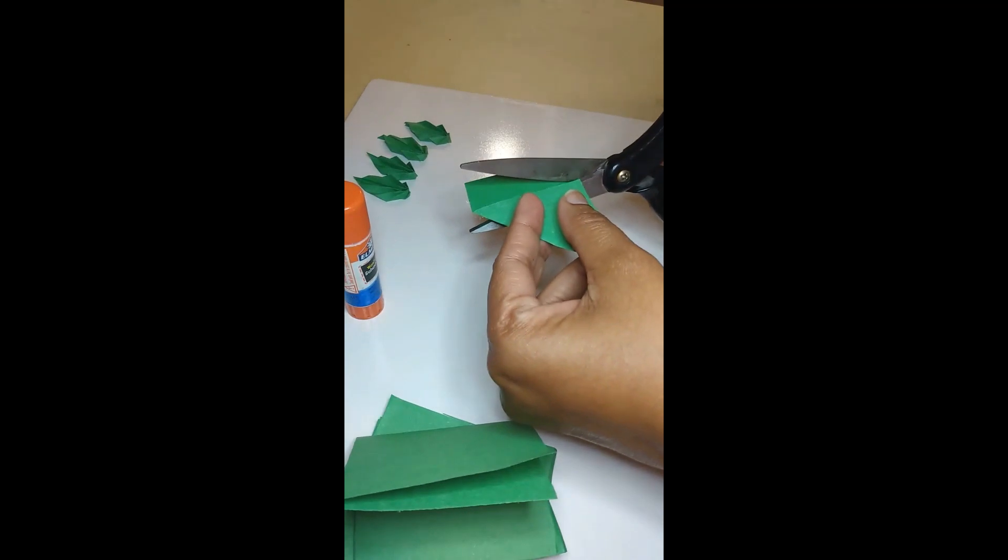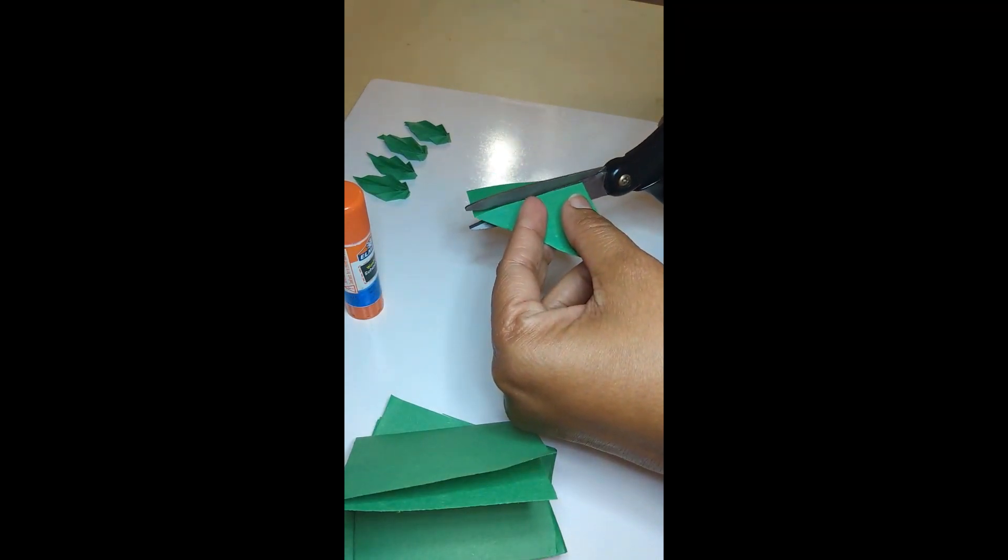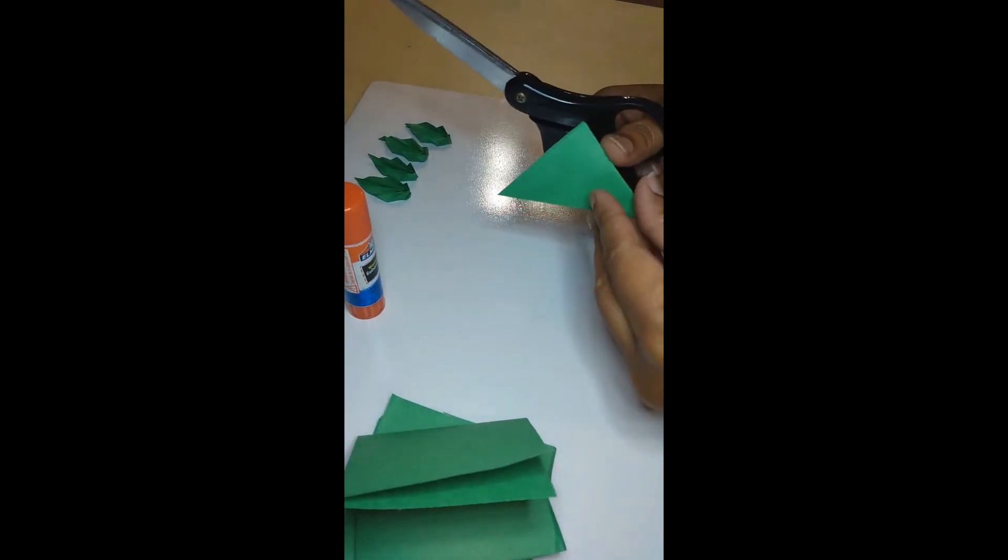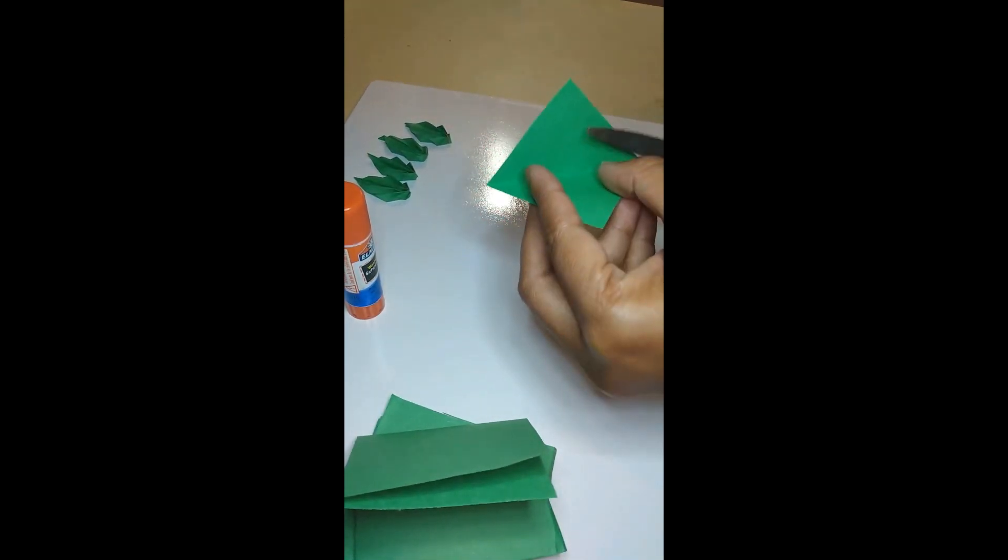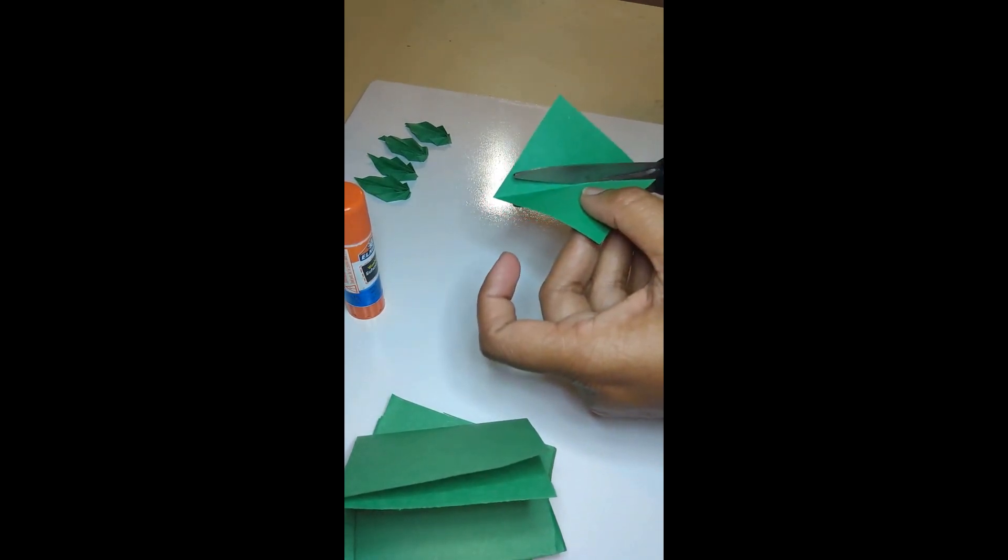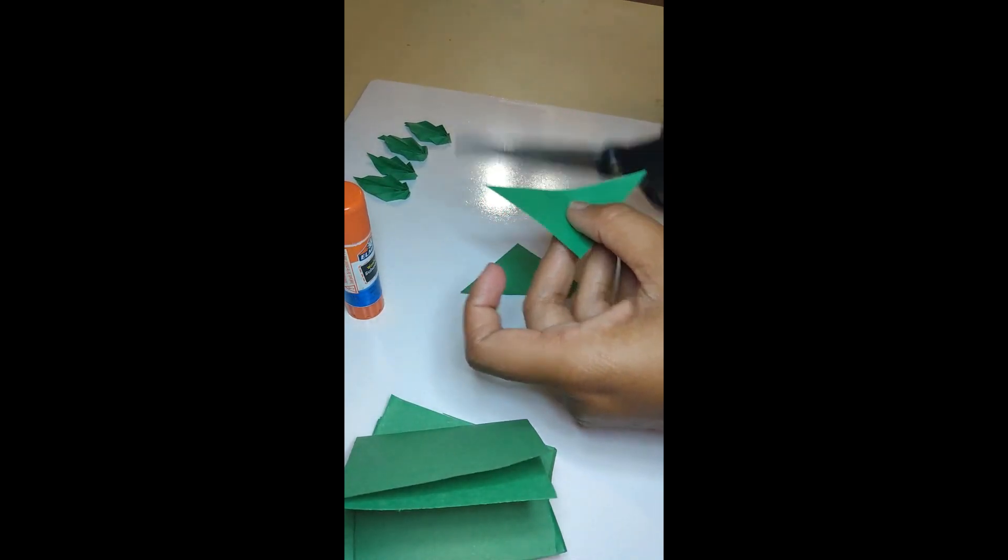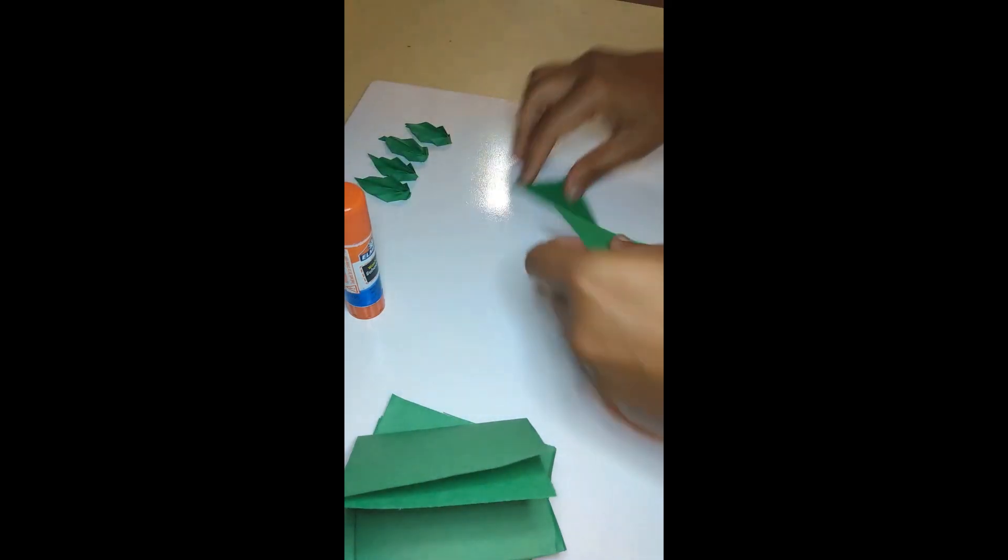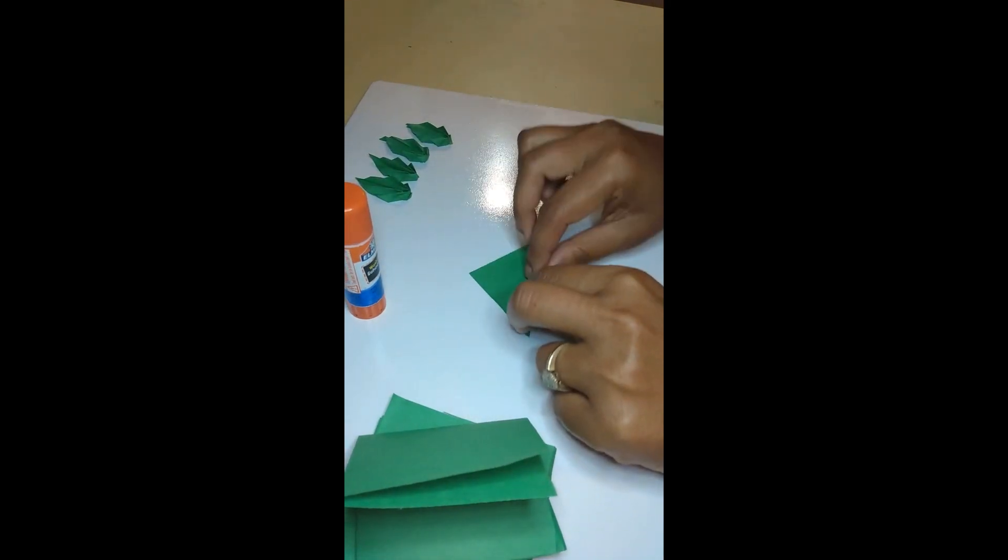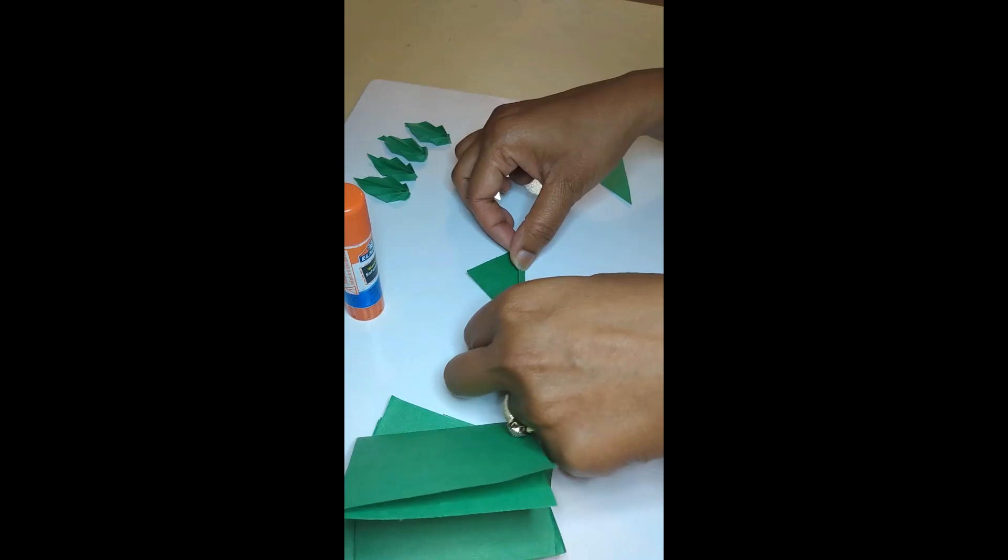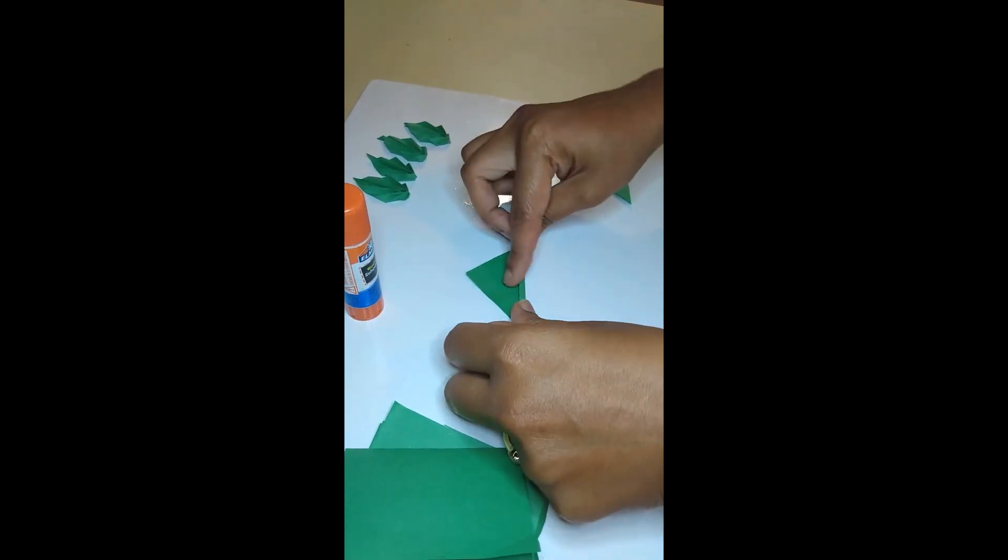Then I cut the edges. Now you will get exactly square shape. Cut it in a diagonal way. Now you will get triangle shape. Now the triangle shape, fold it upside down until the edge.